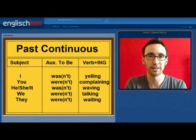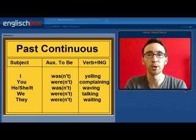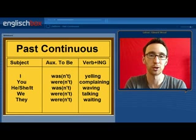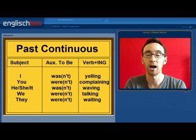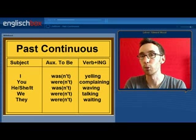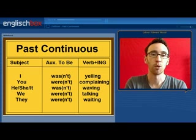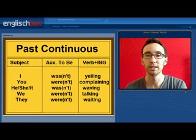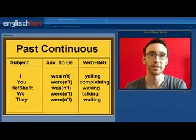To make these sentences negative, all you have to do is add 'not' to the auxiliary verb 'to be': I wasn't yelling, he wasn't complaining, he wasn't waving, we weren't talking, or they weren't waiting.